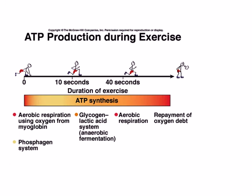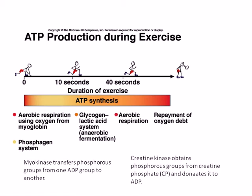Let's look at how ATP production occurs during about 60 seconds of maximum muscle contraction. For the first 30 to 40 seconds, ATP production is mediated through aerobic respiration with oxygen derived from myoglobin. In addition, the phosphogen system, which includes the action of myokinase and creatine kinase, bolsters the amount of available ATP.